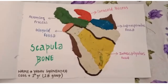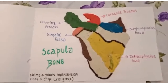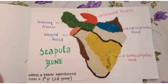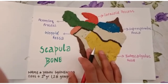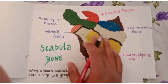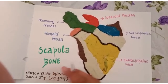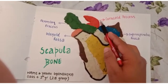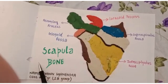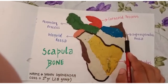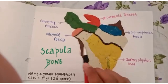Hello everyone, myself Gyanendra from second B group. My self-work topic is the scapula. I am going to explain about this scapula bone. This bone is known as a flat bone and it is triangular in shape, so it is also known as a triangular bone. Here we have the coracoid process, the acromion process, the glenoid fossa, the supraspinous fossa, and the infraspinous fossa.